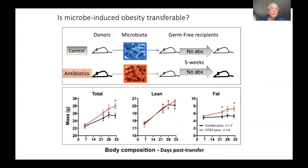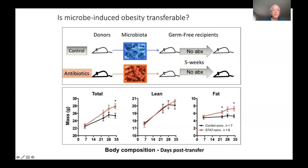Was this a microbiota effect or just an indirect effect from the antibiotics? To test that, we did a microbial transfer from mice that received antibiotics or not. We harvested the microbiota from their cecum and gave these to germ-free mice — mice that had never seen bacteria — then conventionalized them and followed them for five weeks. These recipient mice never saw an antibiotic. We found that the antibiotic-perturbed microbiota caused these mice to increase their total mass; there was no effect on lean mass, but there was an effect on fat mass. This shows the signal is in the altered microbiota and it's metabolic.